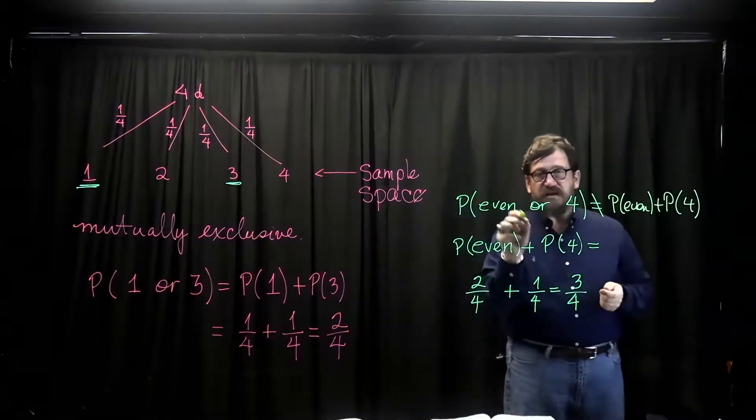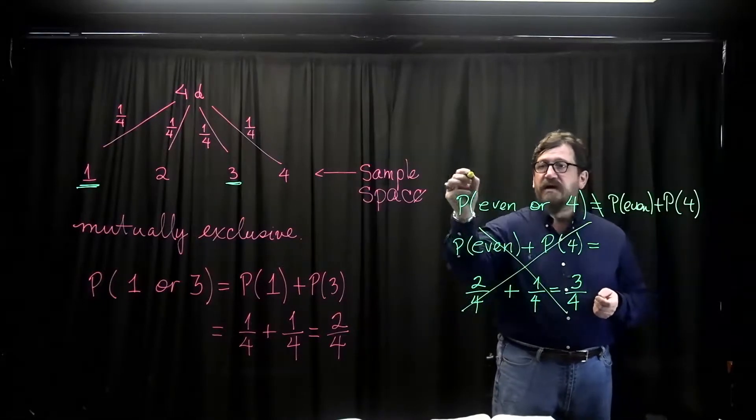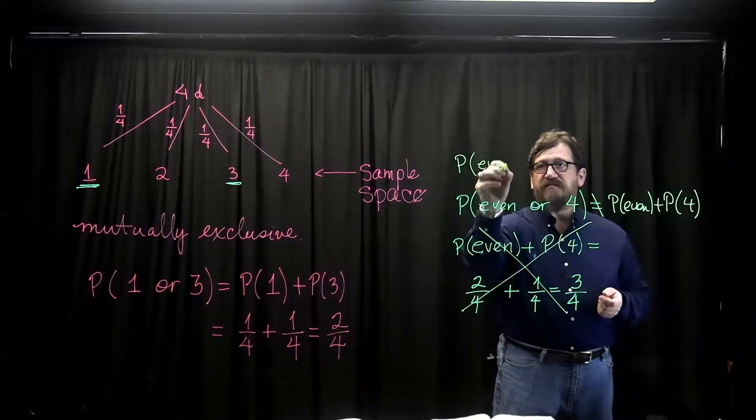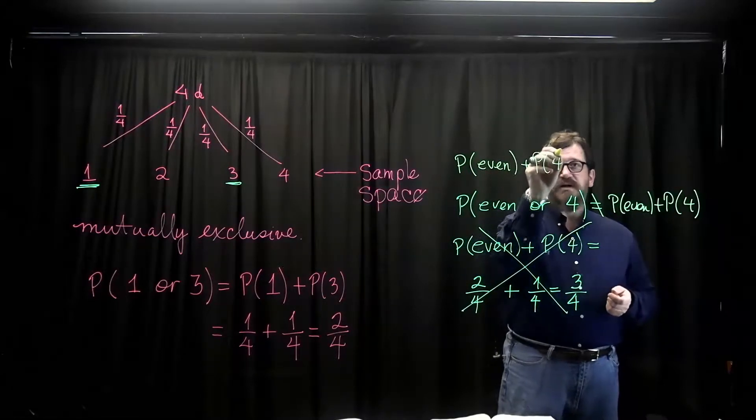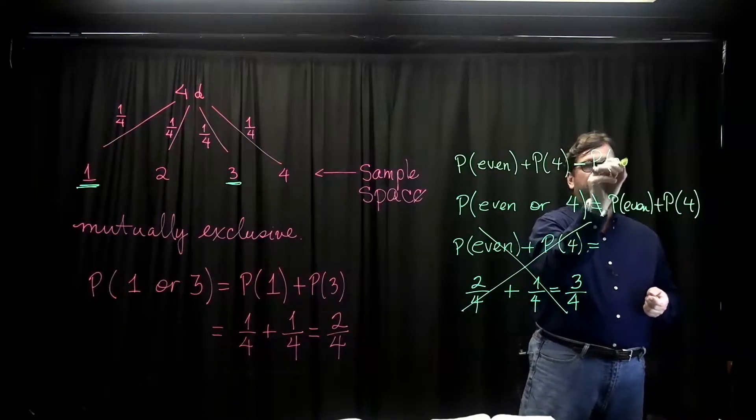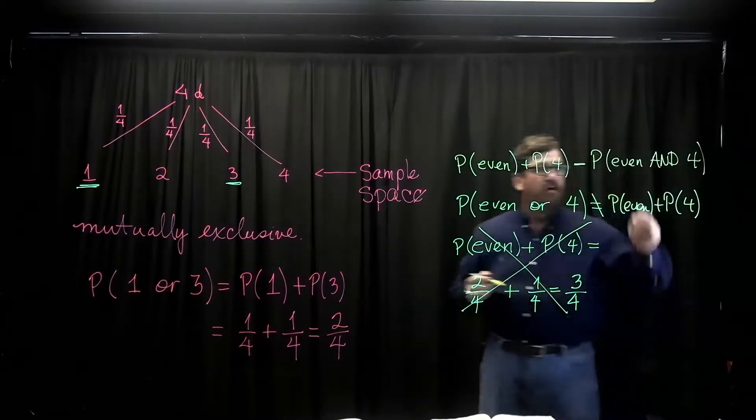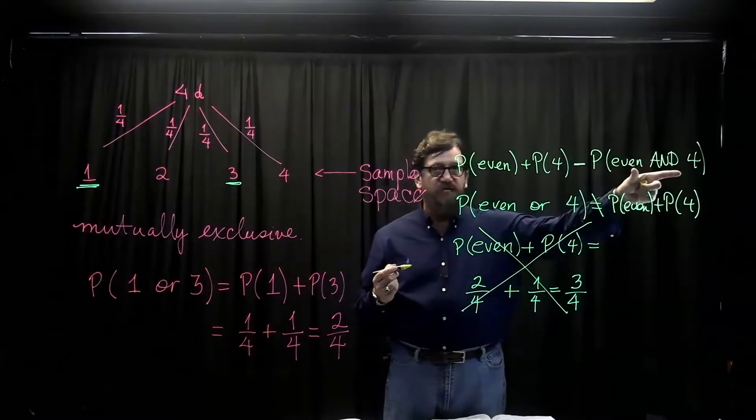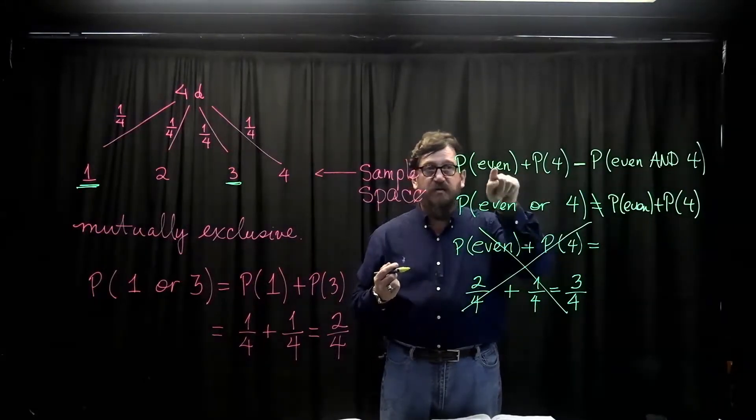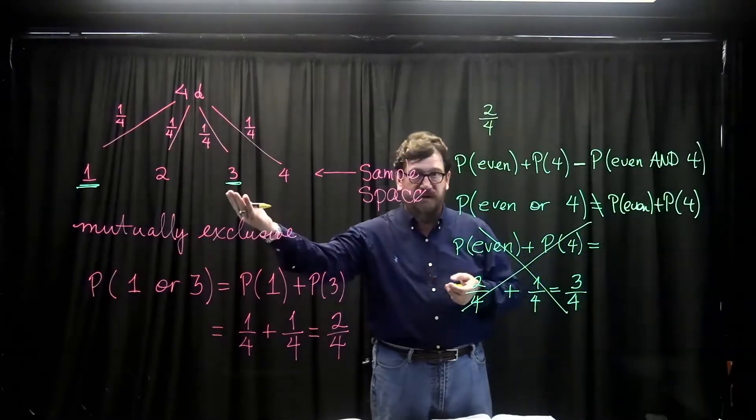So when you look at this right here, I don't want these calculations here. I'm going to go up now and I'm going to say that the probability of even or four is the same as the probability of even plus the probability of four. But then we must remove the probability of even and four. What we're doing by removing this is removing any events that occurred more than once in here.